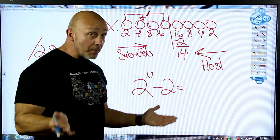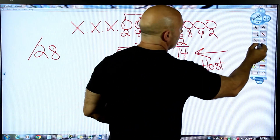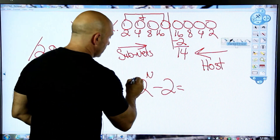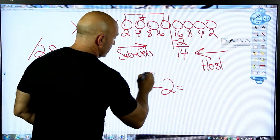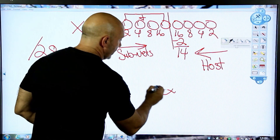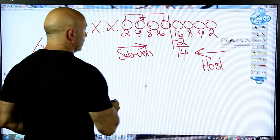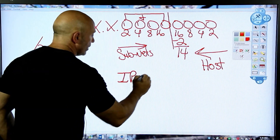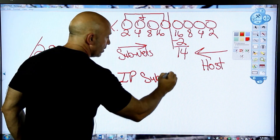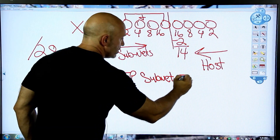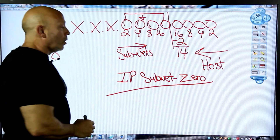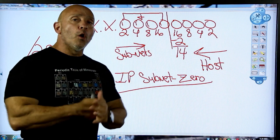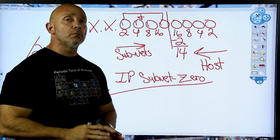Today, routers understand IP subnet-zero. We use the command 'ip subnet-zero', so we don't have to subtract two on the network side anymore. But on the host side — always, always, always subtract two.